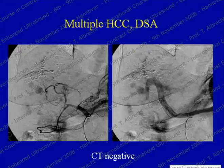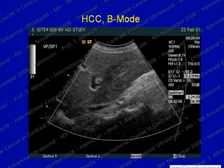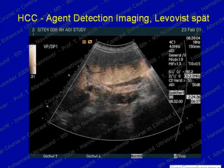Here is a patient with a large HCC. The delayed phase with Levovist beautifully shows not only the lesion but also multiple satellite lesions around the HCC which were completely invisible on unenhanced imaging. With no contrast uptake of Levovist in the delayed phase — which is slightly different from SonoVue — this is very useful for detection, although it is not always the case.